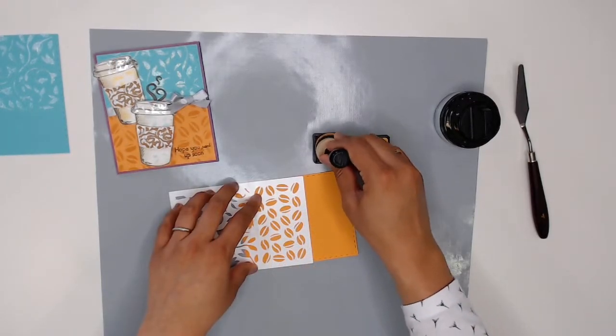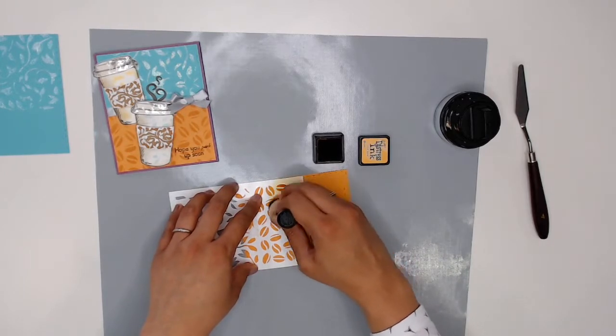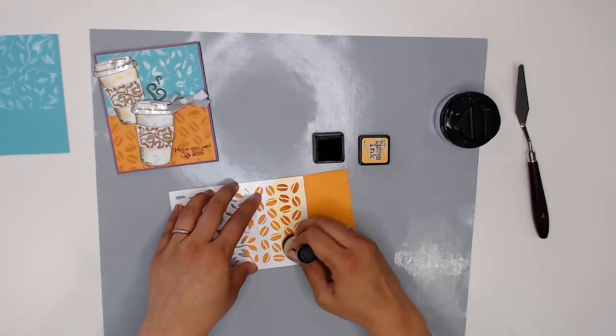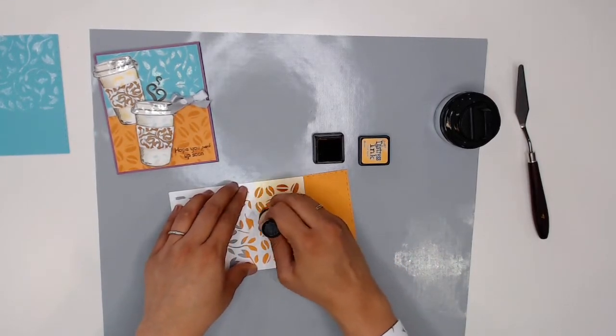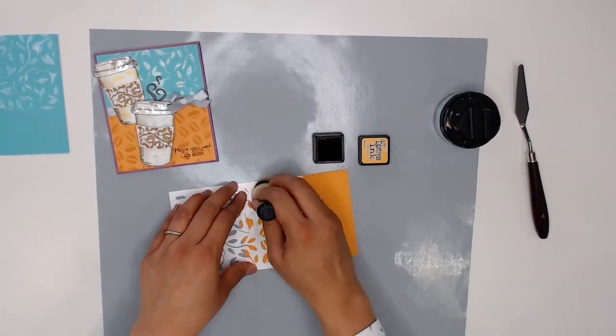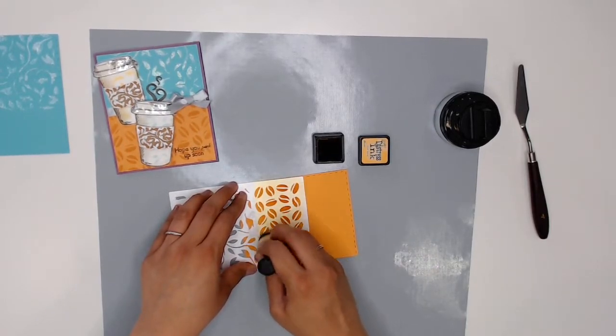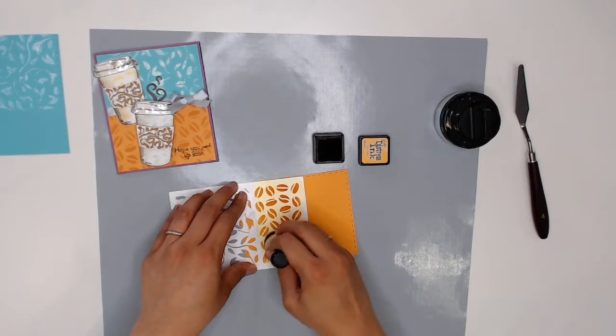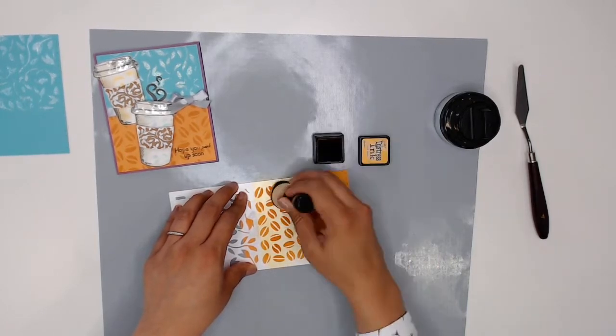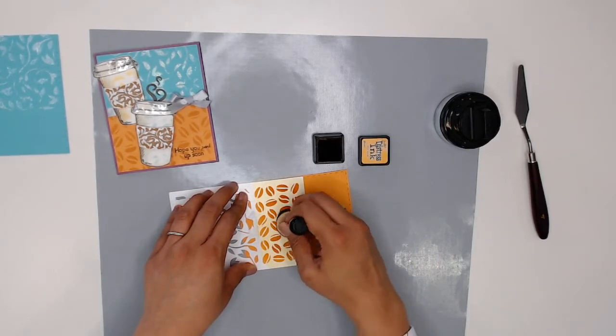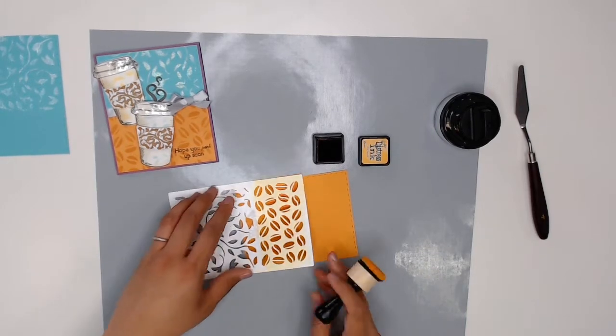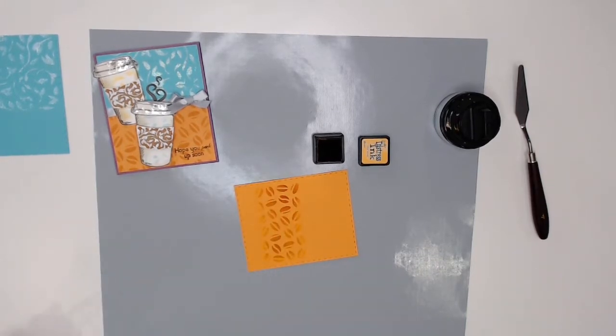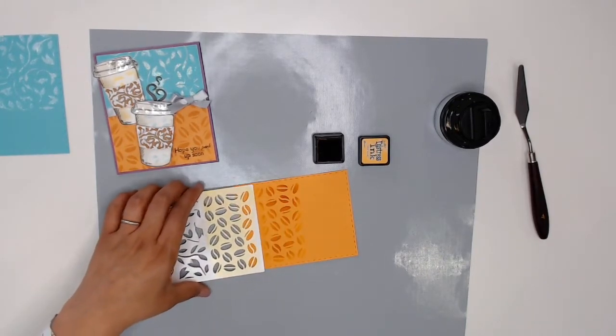I'm putting some color on my mini ink blending tool and I'm just going to color right through the stencil and I want to make sure to not get any of the leafy pattern of my stencil on my cardstock so I'm being very careful when I get to this little edge here where the coffee bean pattern ends because I don't want to get any leafiness on this part of the cardstock.